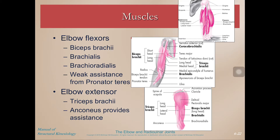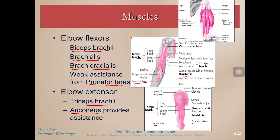The elbow flexors — most people are familiar with the first one, biceps brachii. Here it is in the list and here it is on the picture; you can see it has two heads. Brachialis is deep to the biceps brachii, and brachioradialis is distal to both of those. Most of the muscle body is actually on the forearm, but it does cross the elbow and has an interesting array of actions. Pronator teres provides some weak assistance in elbow flexion — it does cross the elbow, so it can assist in flexion, but that's not its primary action. The elbow extensors are triceps brachii, which has three heads, and anconeus, which provides some assistance in extension.